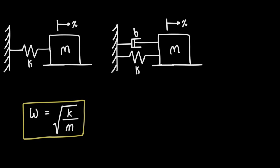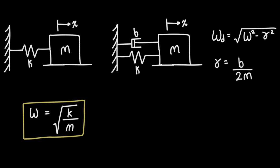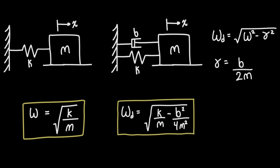Now if we add a damper to the system we need to modify our equation for the angular frequency. Our damped angular frequency is going to be the square root of our undamped angular frequency squared minus our damping constant squared, where the damping constant is equal to b over 2m. Combining those equations gives us the square root of k over m minus b squared over 4m squared.